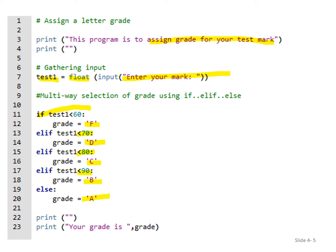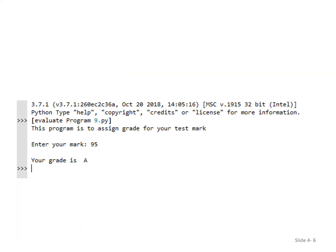The else condition means the mark is greater than or equal to 90, and it will print A. Then you print 'your grade is' to display the result. For example, if you key in the mark 95, the output will be A.